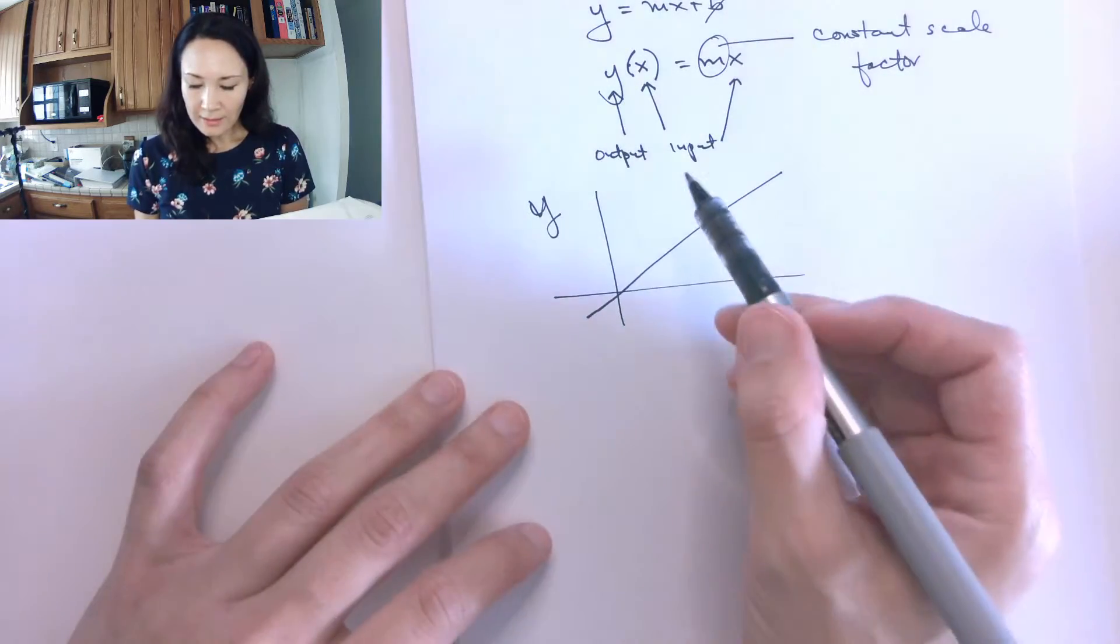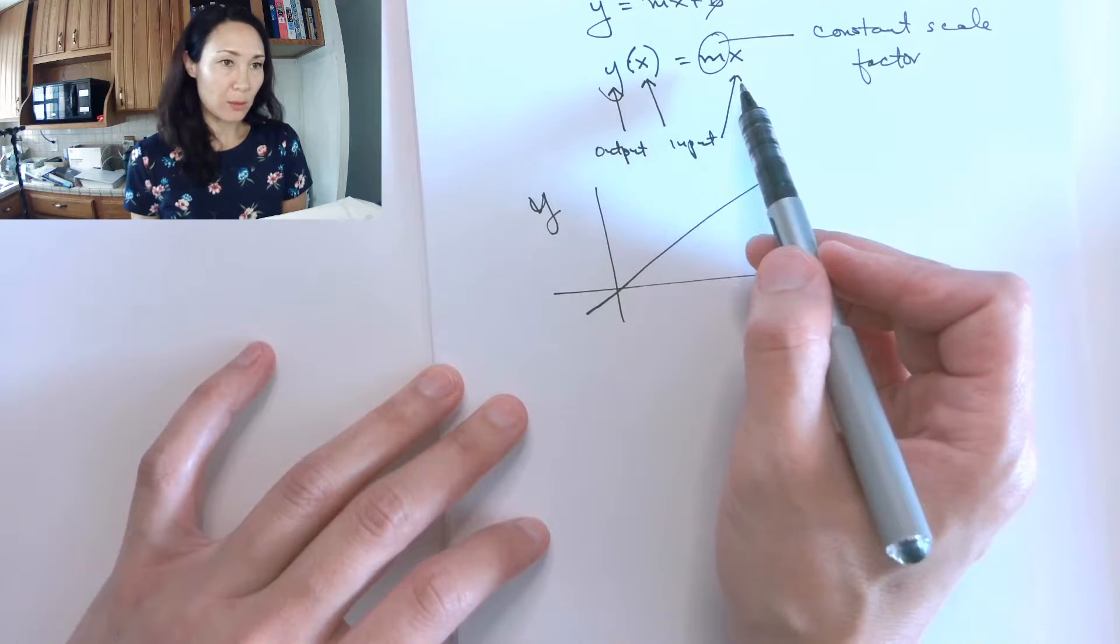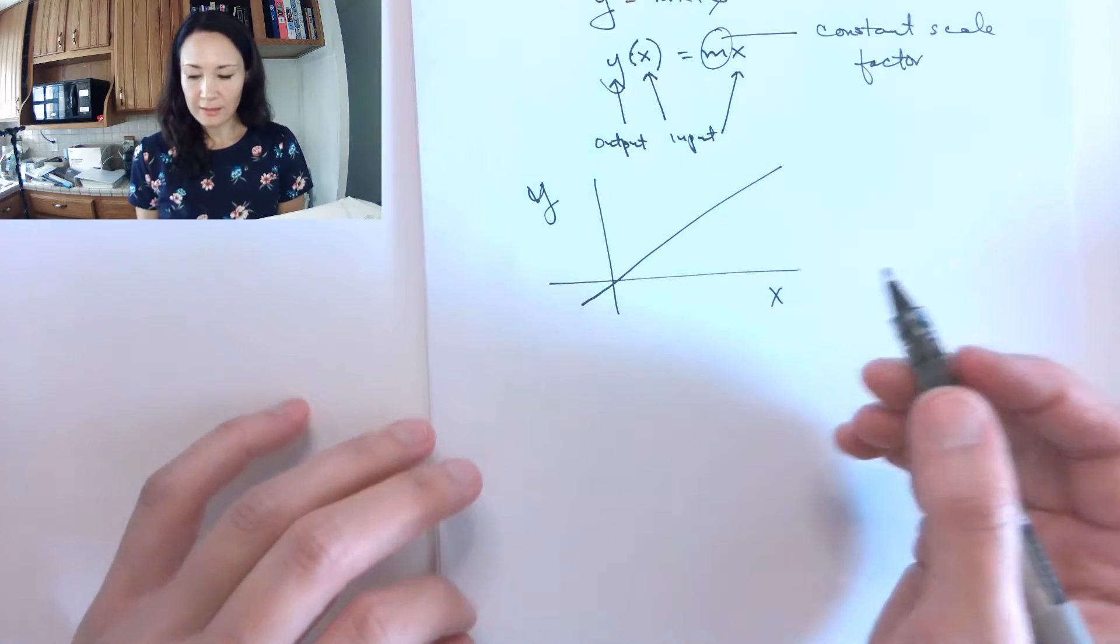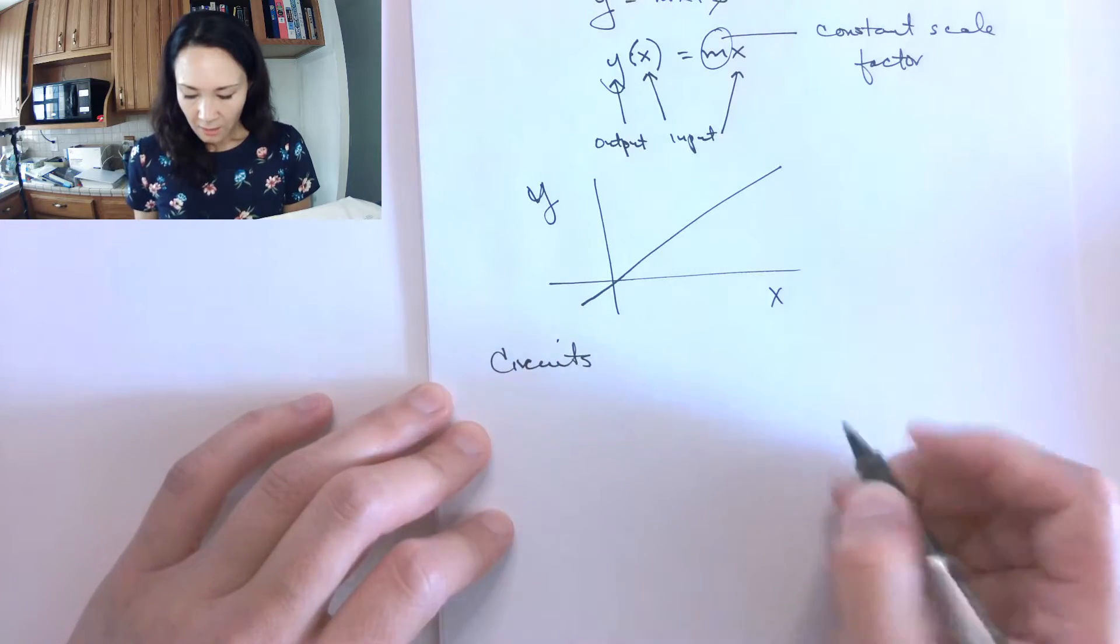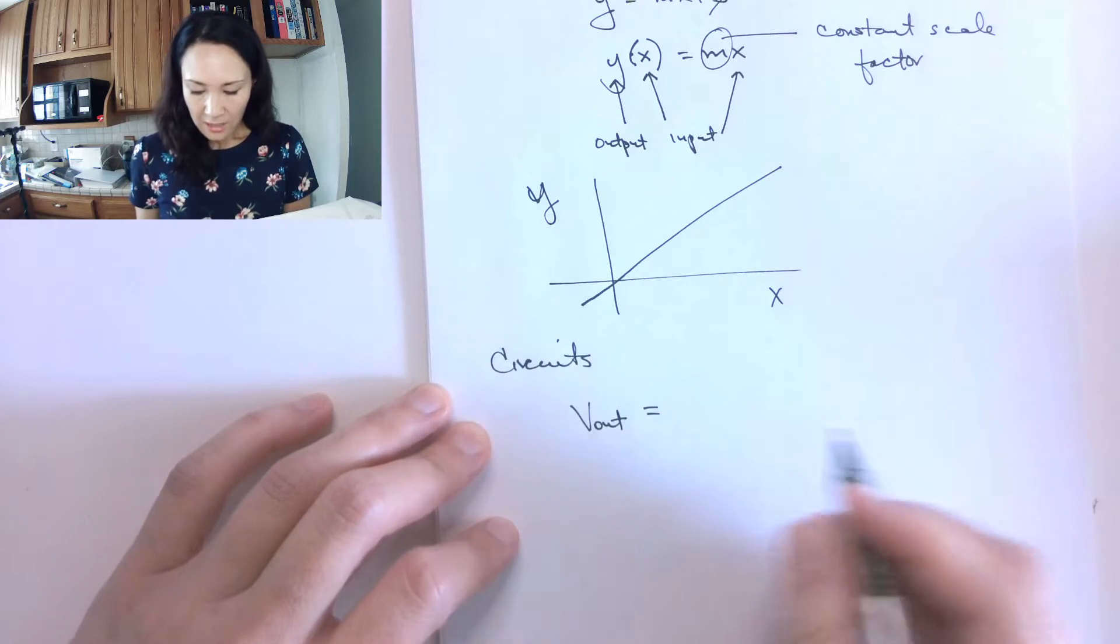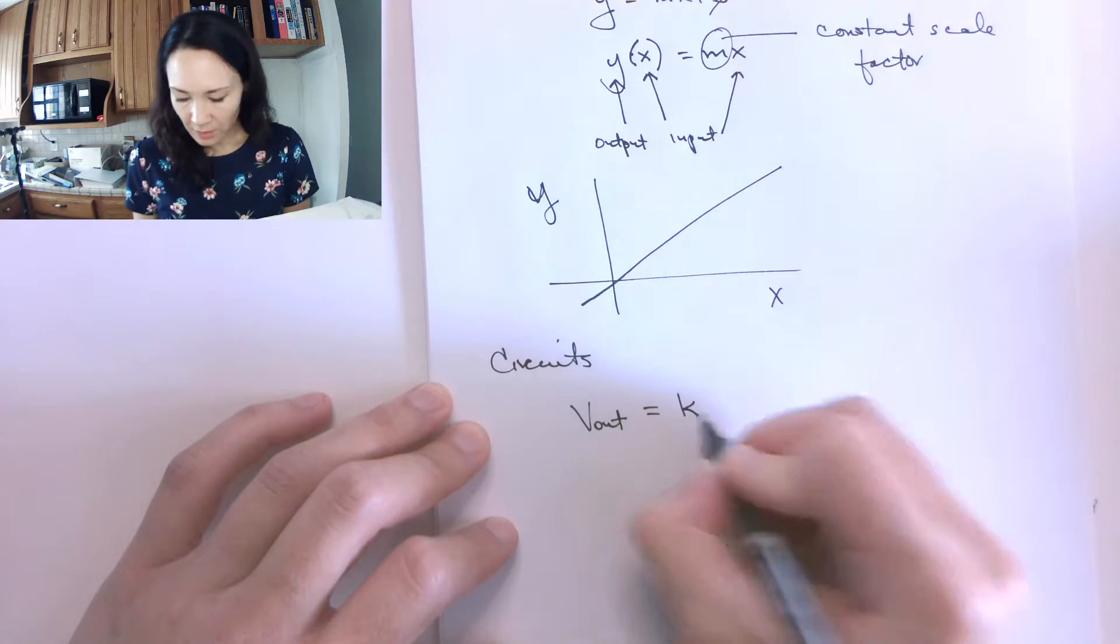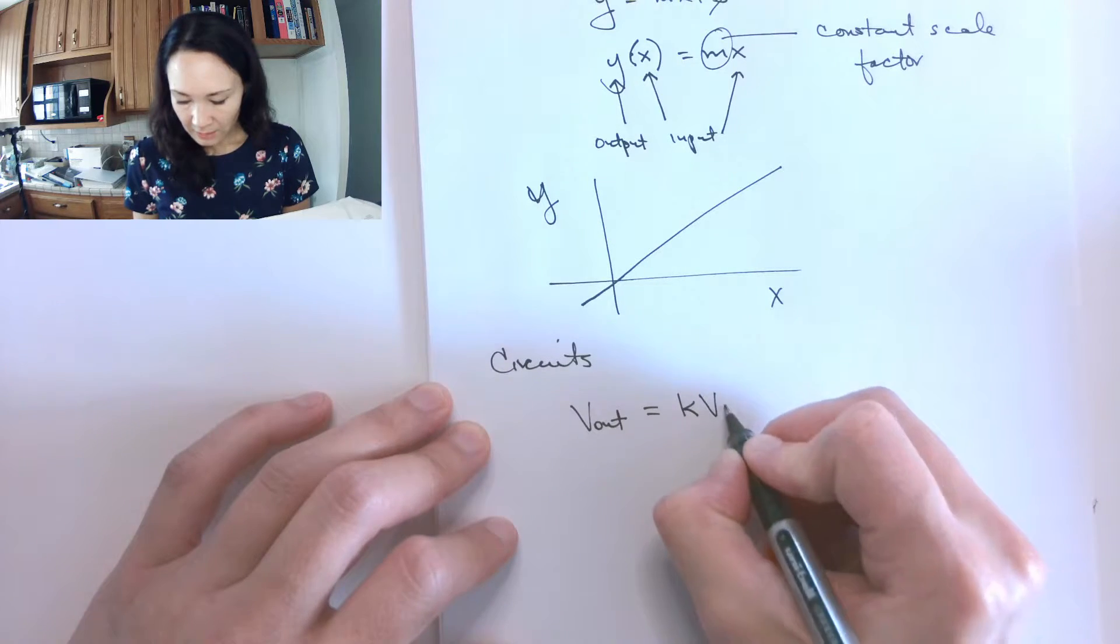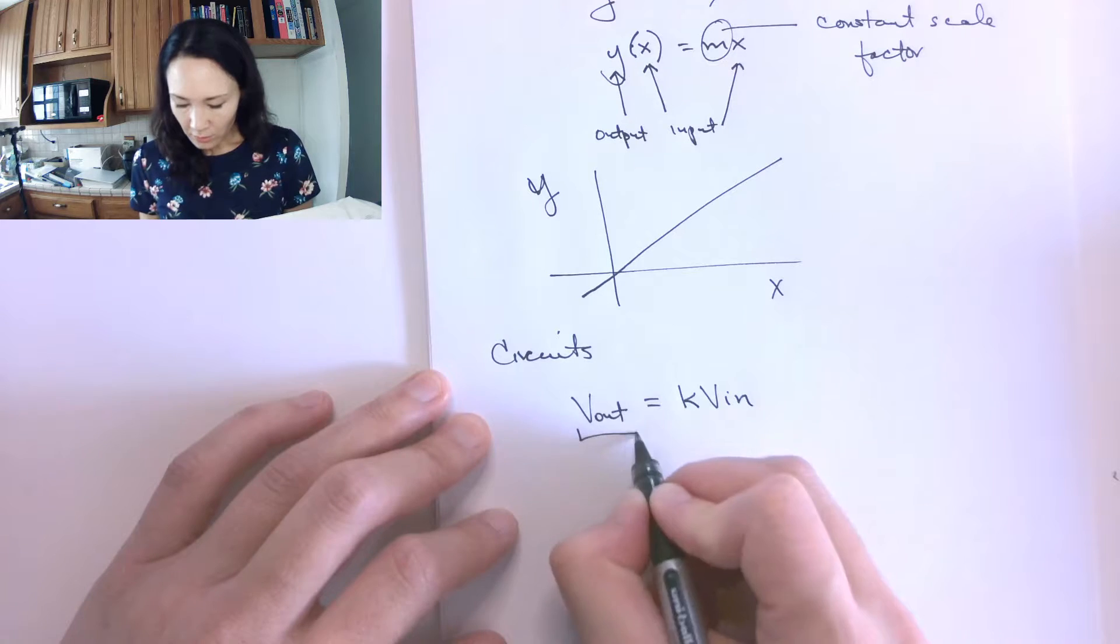So the concept is, if I'm going to draw a parallel between this linear equation that we've seen before in our early math classes and for circuits, how it's going to work is we're going to have a v out, and we want to write v out as a function of some constant k times v in. So what are all these pieces?